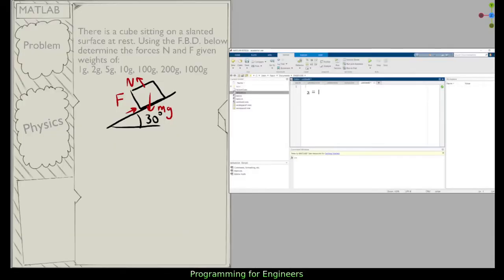All right, so for the next problem we're going to solve with MATLAB, we'll look at a standard physics problem. Let's say there is a cube sitting on a slanted surface at rest. Using the free body diagram below, determine the forces N and F given weights of 1, 2, 5, 10, 100, 200, and 1000 grams. And you can assume gravity is 9.81 meters per second squared.